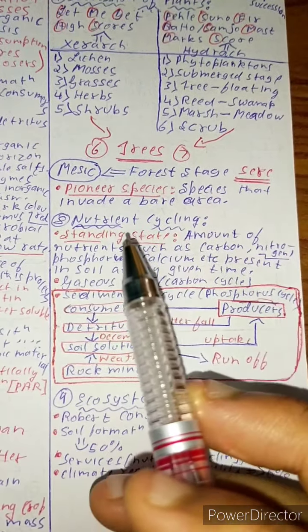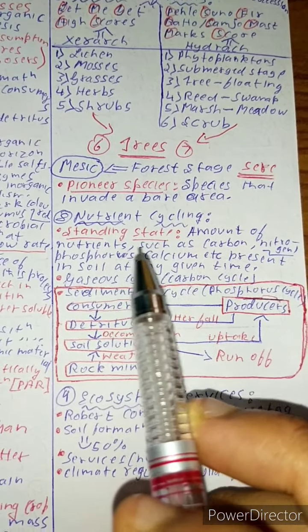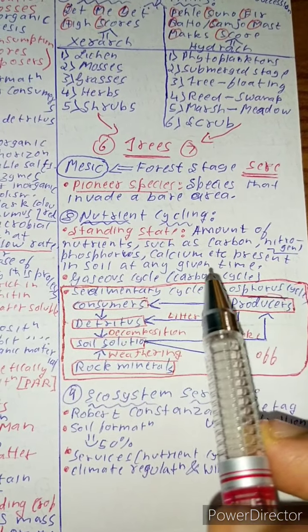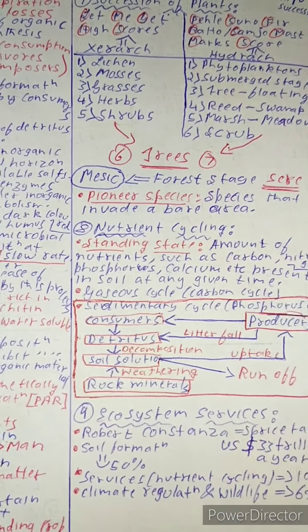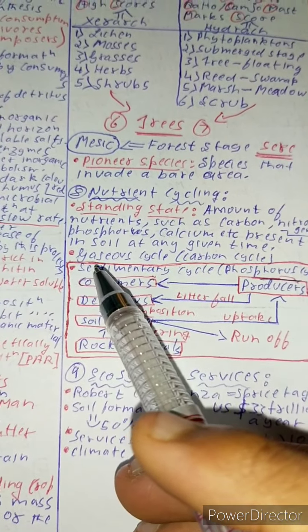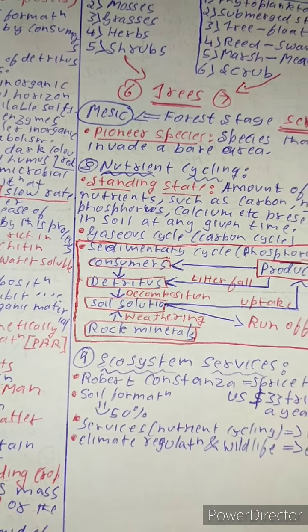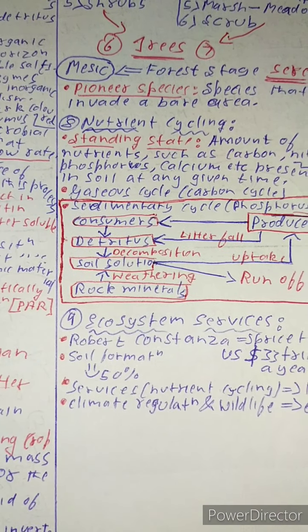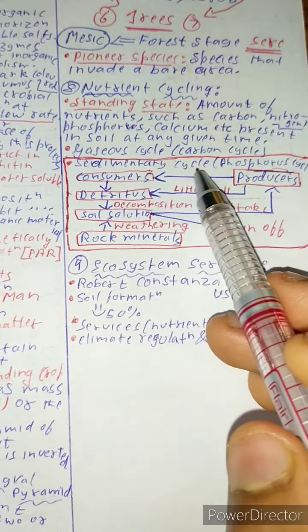Now let us see what is nutrient cycling. To understand nutrient cycling, you need to know standing state. Standing state is the amount of nutrients such as carbon, nitrogen, phosphorus, calcium, etc. that's present in soil at any given amount of time. There are two types of cycle: gaseous cycle and sedimentary cycle. Gaseous cycle is also called carbon cycle, which you do not need to know so much because it's always present in nature and it's very simple - the carbon dioxide which we breathe and which we exhale, it goes into the atmosphere, forms greenhouse gases, again it's utilized by plants, release of oxygen and the carbon dioxide which comes from vehicles and all of those.